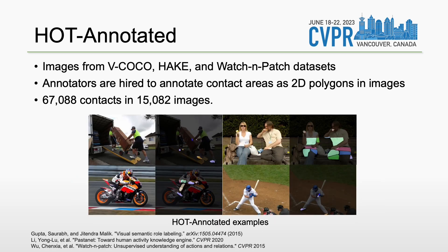For HOT-annotated, we use images from HOI datasets like V-Coco and Hake, and the human-activity dataset Watch and Patch. We hired professional annotators to draw polygons around the contact areas and assign human-body-part labels to them. Combining HOT-generated and HOT-annotated, our dataset has around 35,000 images and 160,000 contact area annotations in total.